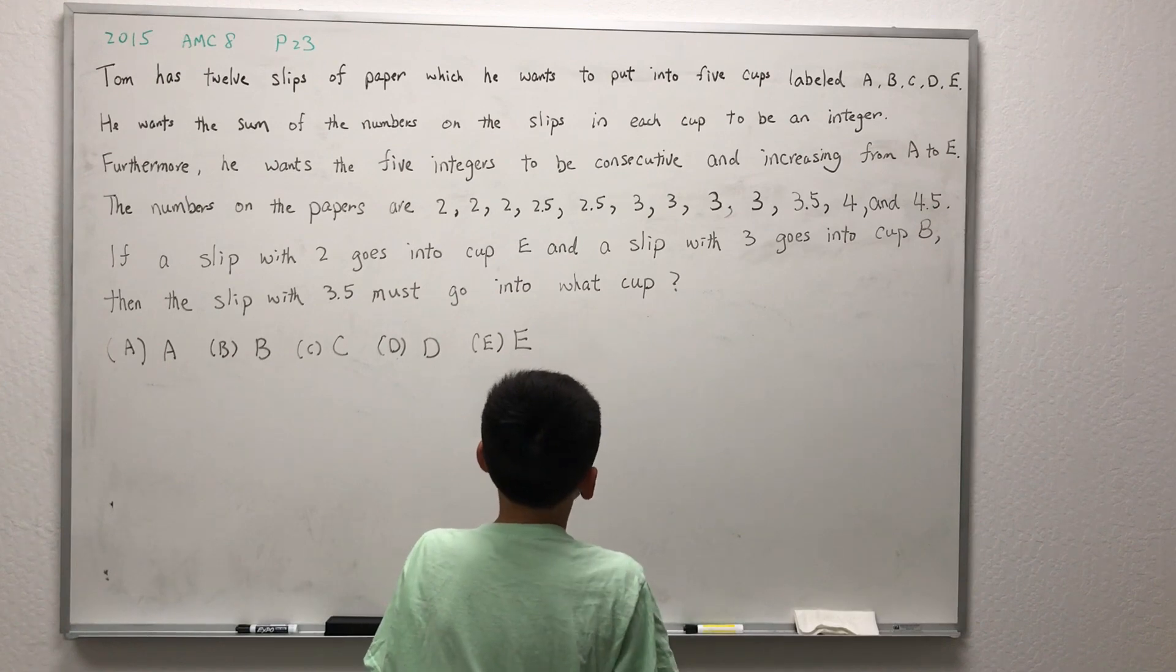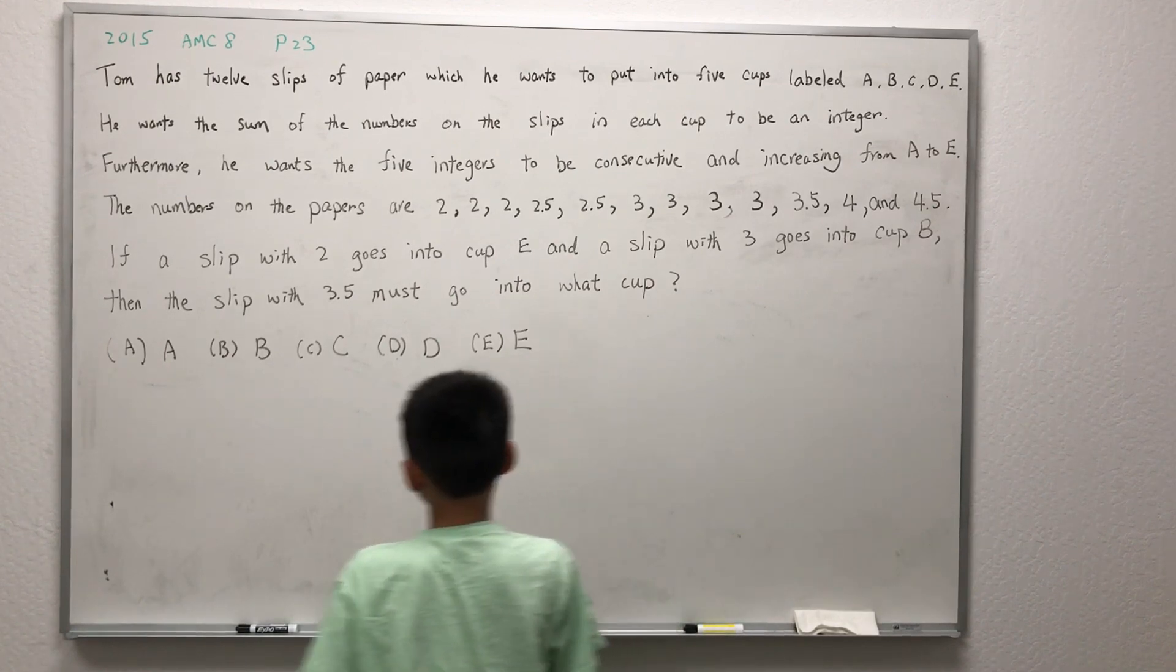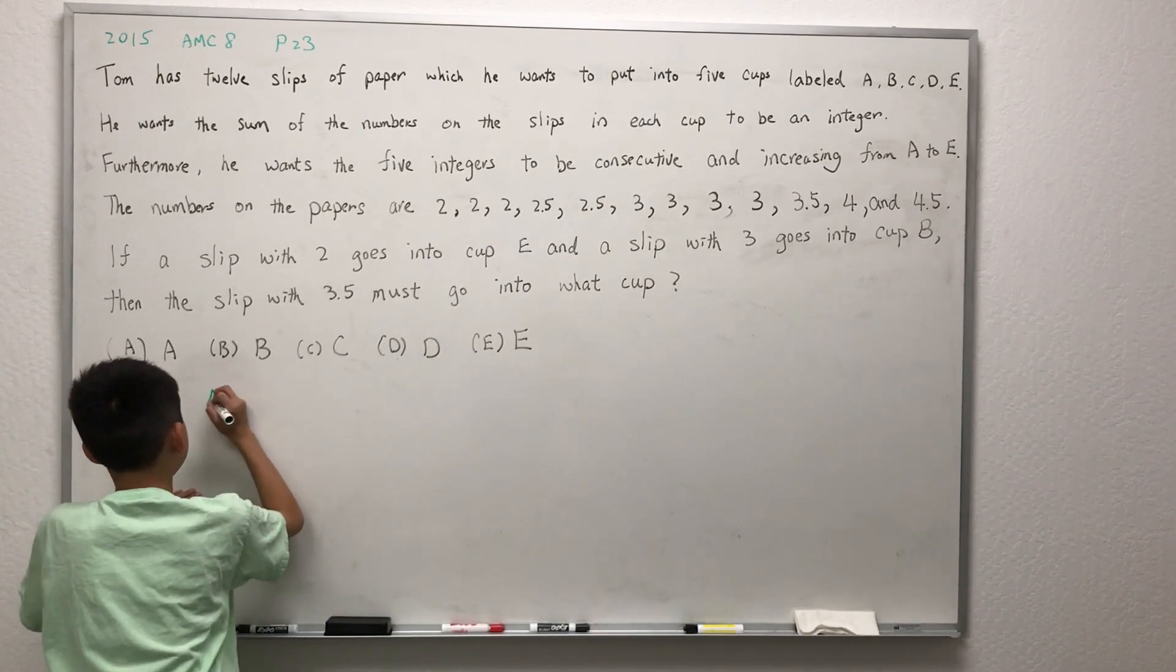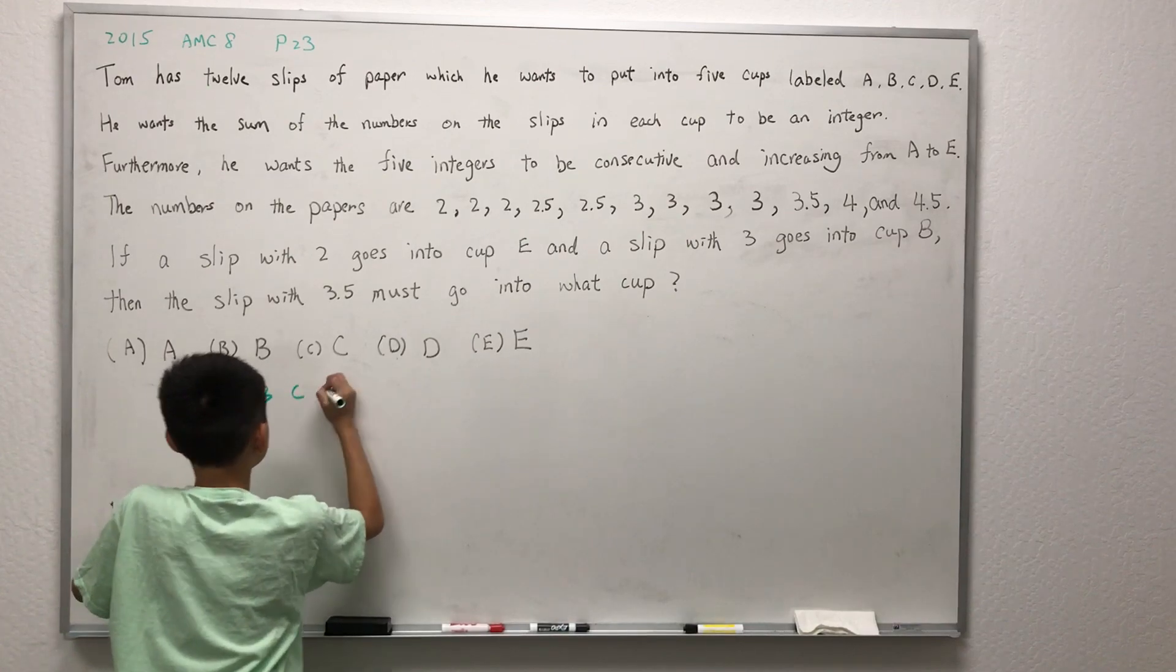Tom has twelve slips of paper which he wants to put into five cups labeled A, B, C, D, and E.